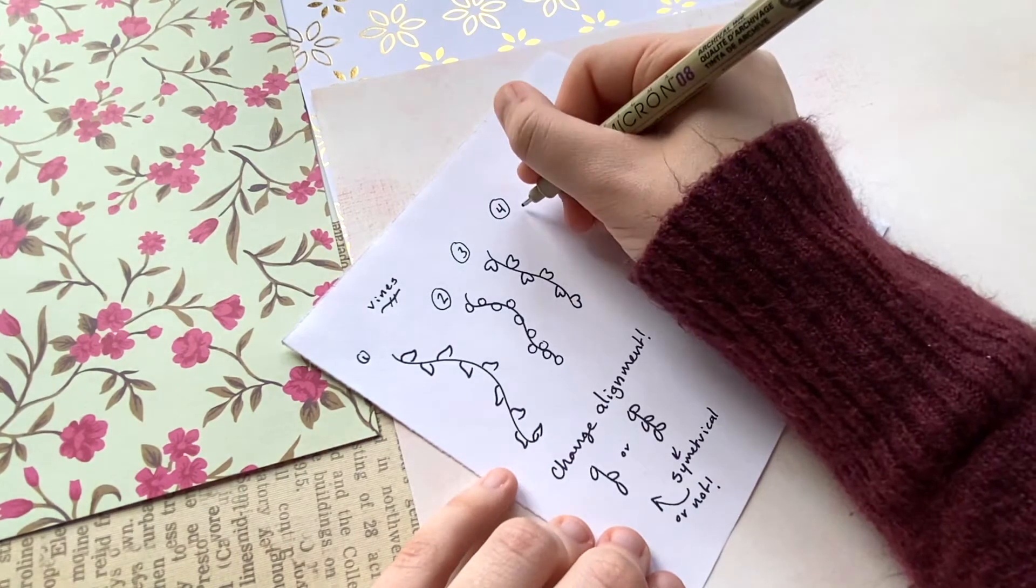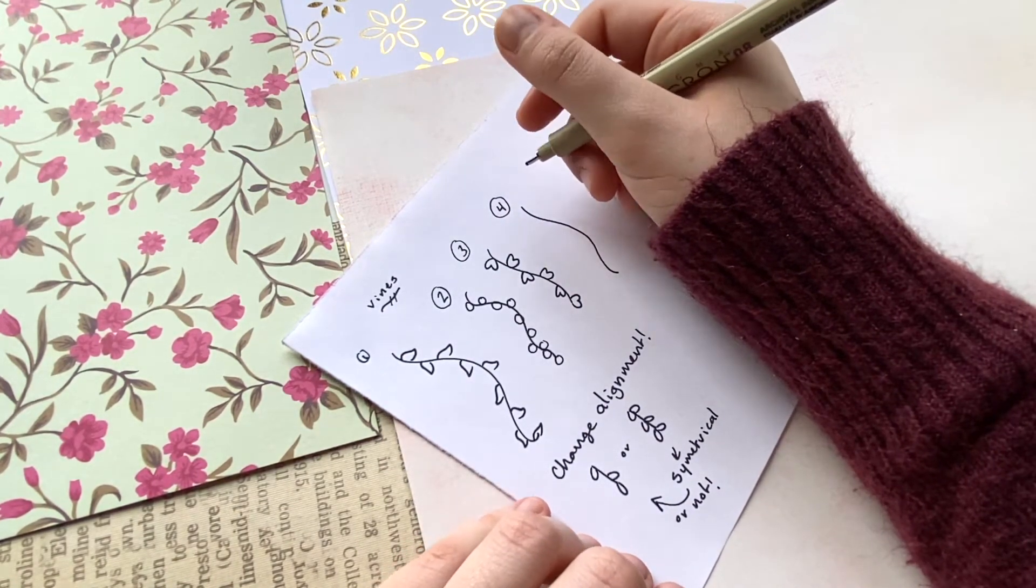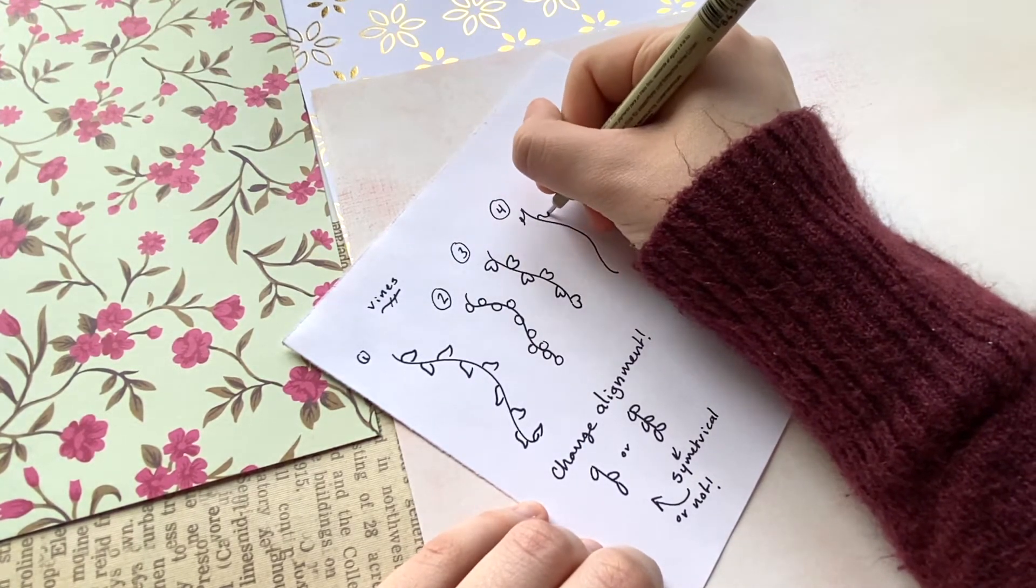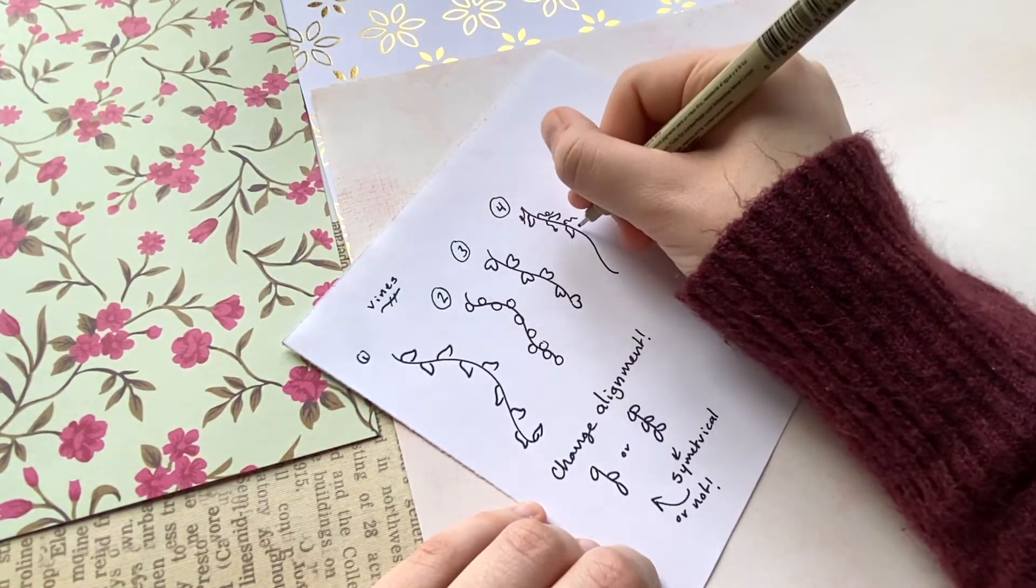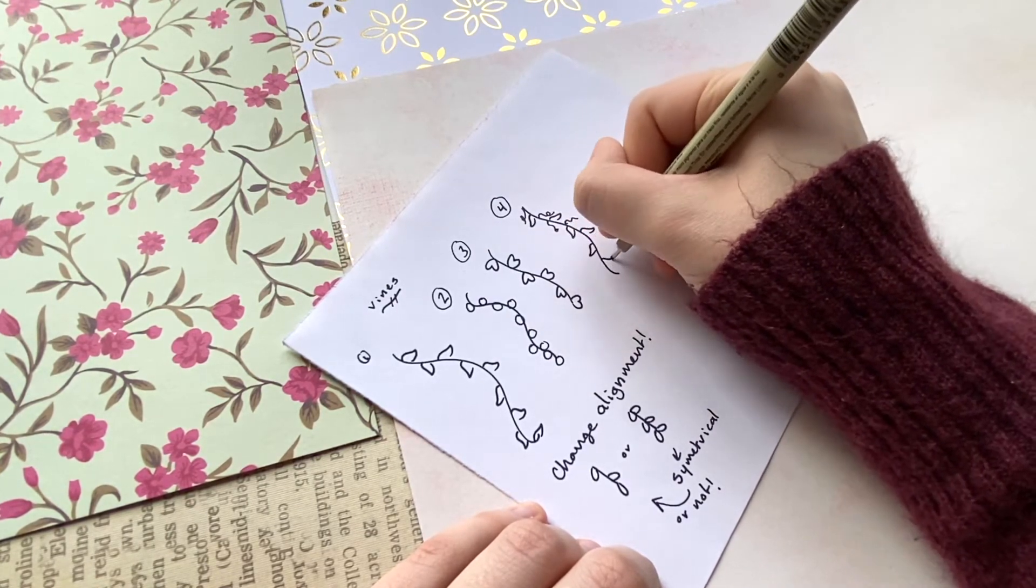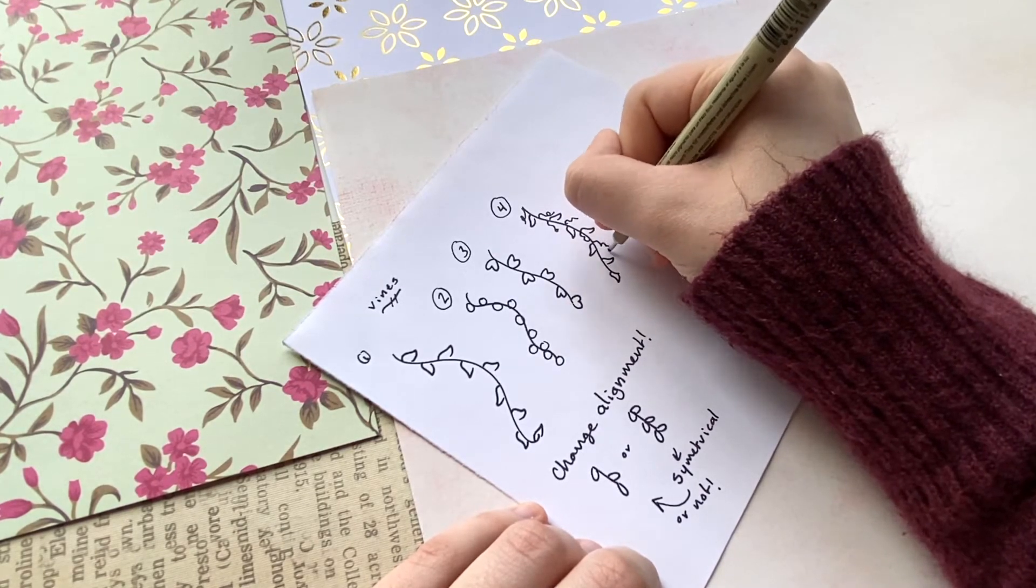And then finally for the fourth type of vine that I'm showing you guys today: it's kind of based off more of a grapevine. So if you've ever seen a grapevine in person, there's actually these little other twirly tiny pieces of vine coming off of it. You can look up a reference—but it basically makes the vine look a little bit more full and detailed.